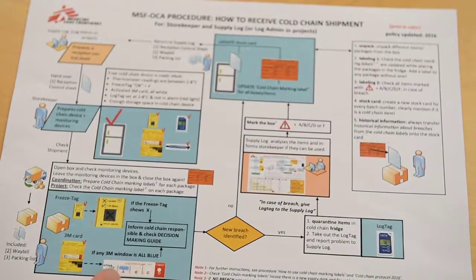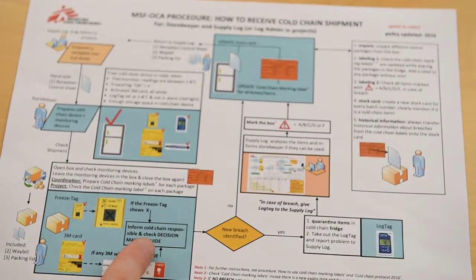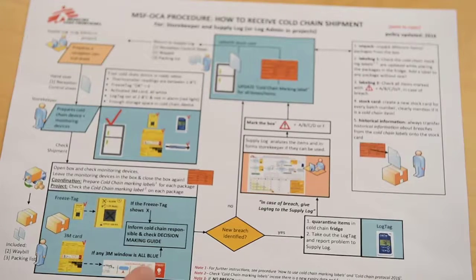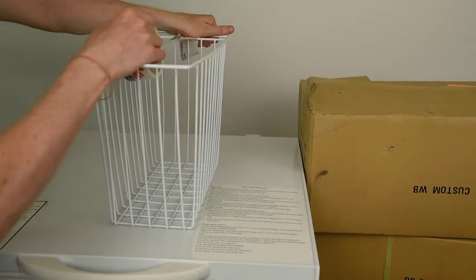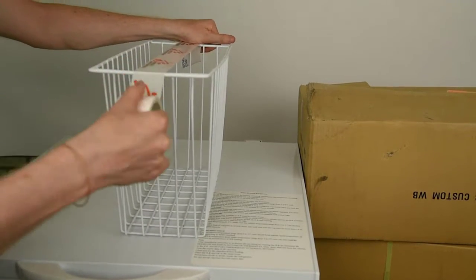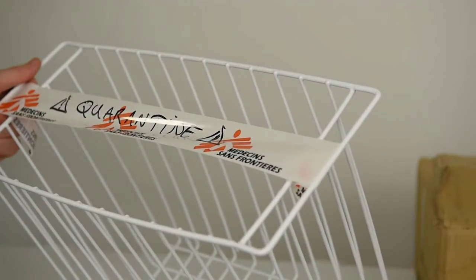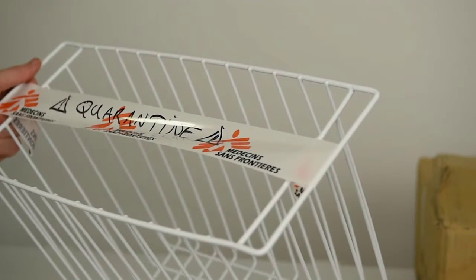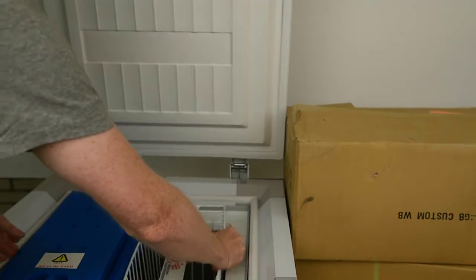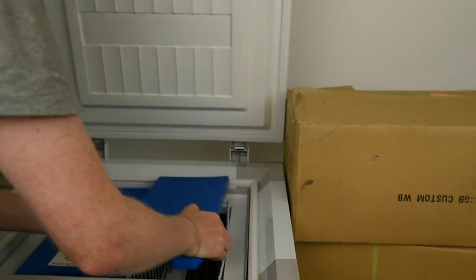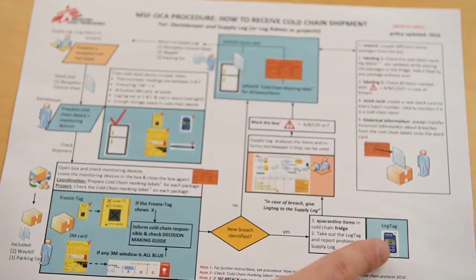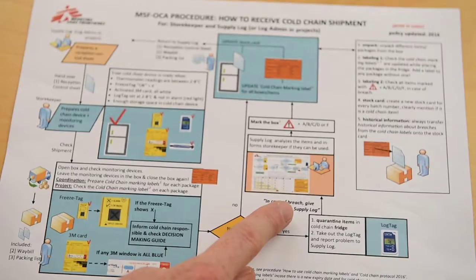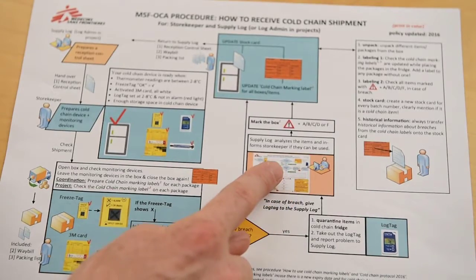We see written here: if any 3M window is all blue, check the decision making guide. Based on this information a new temperature breach has been identified. We prepare to quarantine the items in the cold chain fridge. We take out the lock tag and give it to the supply log, who check the decision making guide.